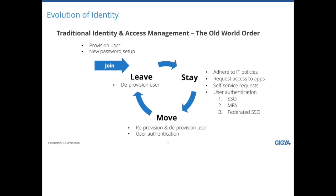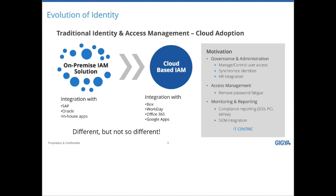Four years back, we started the whole move towards the cloud, but the identity perspective wasn't really different. You still had on-premise solutions doing the heavy lifting for ERP integrations with SAP, plus a cloud-based IAM solution managing access to external applications like Box, Workday, Office 365, and Google Apps. The motivations were still the same — achieve identity governance, manage and control access to different applications, ensure the least level of privileges. The single source of truth was still the HR system, or in many cases active directory or an LDAP where user information is stored.